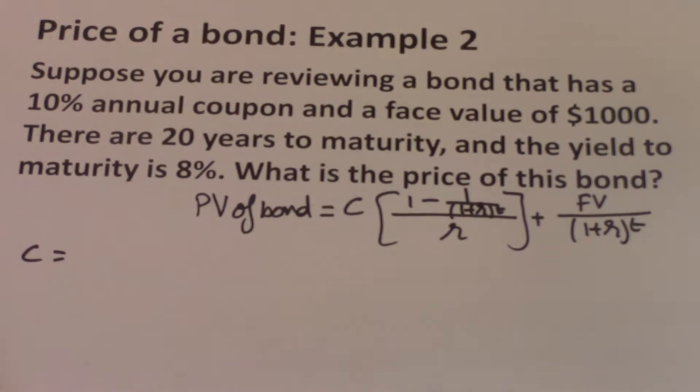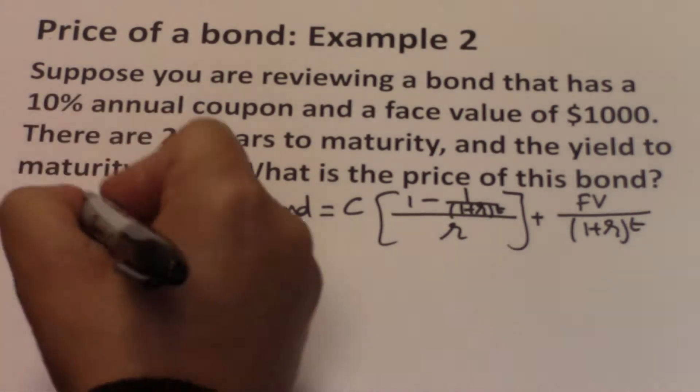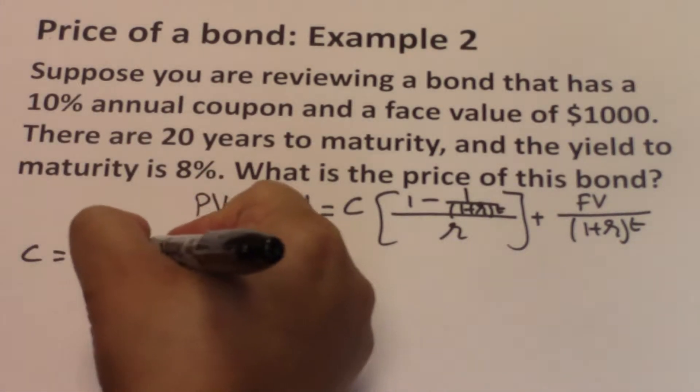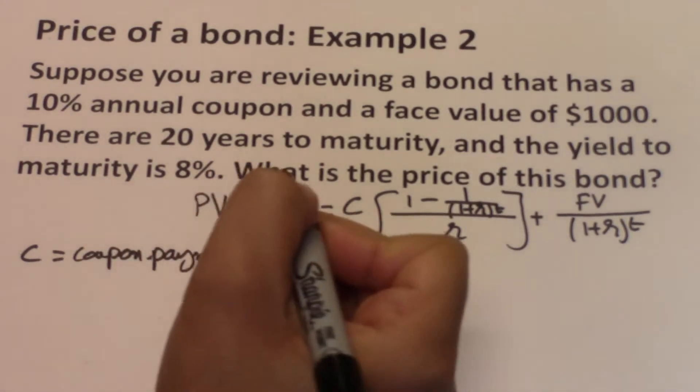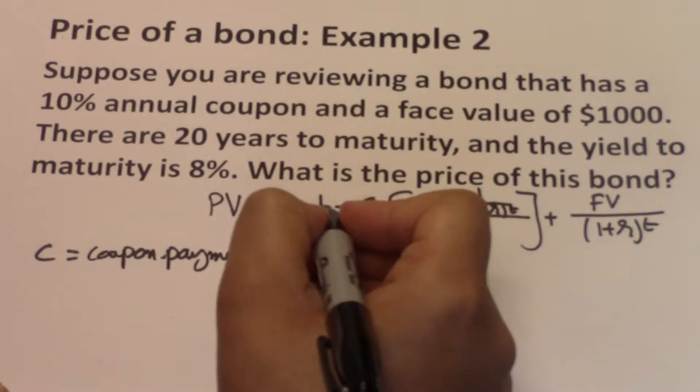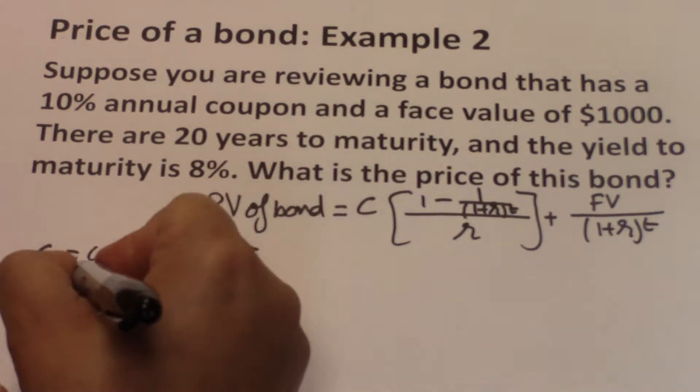C is the coupon payment, and we determine the coupon payment using the face value and the coupon rate. So here the face value is $1,000.